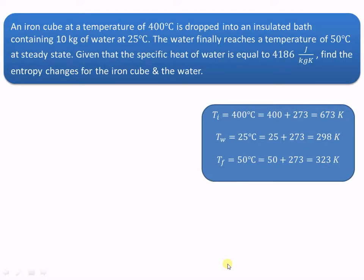Now let us see another example. Suppose we have an iron cube at a temperature of 400 degrees centigrade, and it is dropped into an insulated bath containing 10 kg of water maintained at 25 degrees centigrade. The temperature of the iron cube converts to 673 Kelvin, the temperature of water is 298 Kelvin, and the final steady-state temperature achieved is 50 degrees centigrade, which is 323 Kelvin.